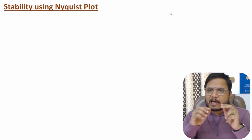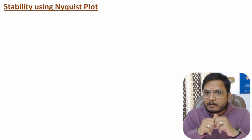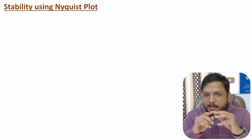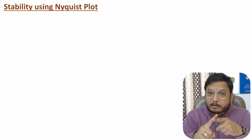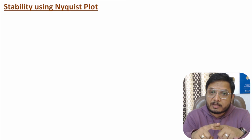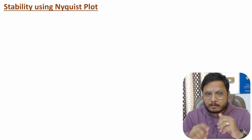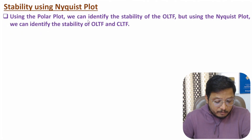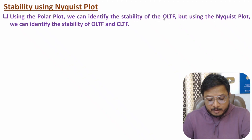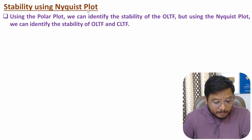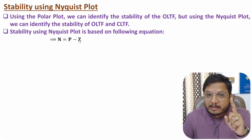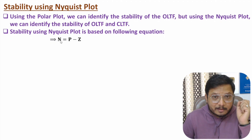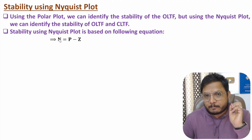Now I will explain stability using Nyquist plot. With the polar plot alone, we can identify stability of the open loop transfer function only. But with the Nyquist plot we can identify stability of both the open loop and closed loop transfer functions. Stability is determined using the equation N equals P minus Z.